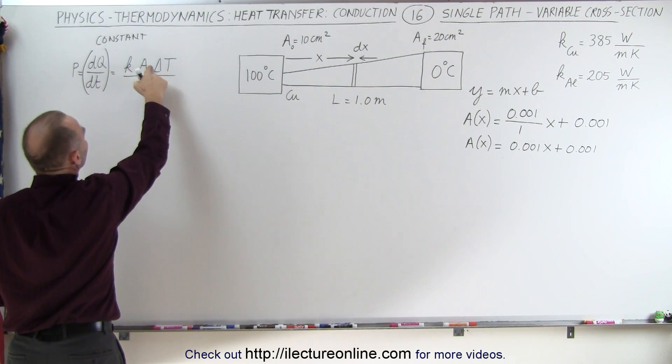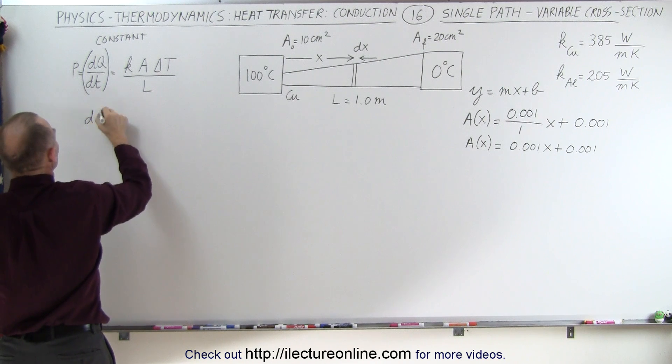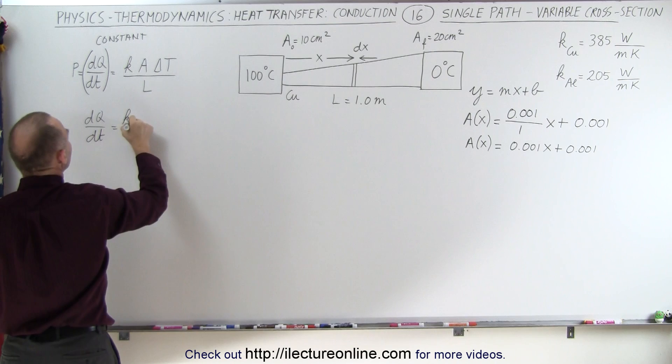And that's going to be an equation. And this we're going to write as dT/dx. So let's rewrite the equation as dQ/dt, which is a constant, is equal to k times...